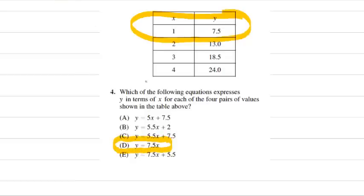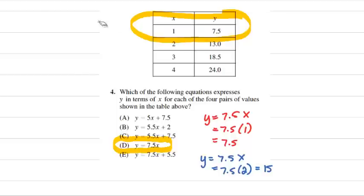If I tried Y equals 7.5X, if X equals 1, then Y equals 7.5. Let's try for 2 and 13.0. Y equals 7.5X, so for 2 I should get 13.0. 7.5 times 2, which is 15, so it's not 13.0. So now we know that we can rule out choice D.